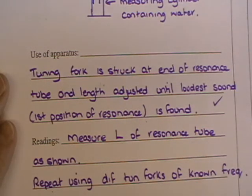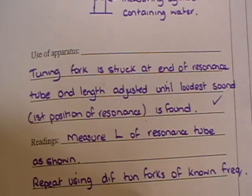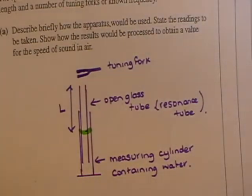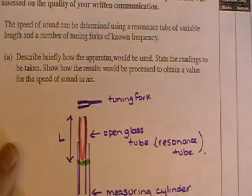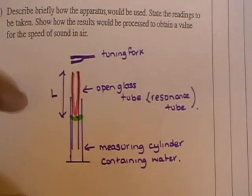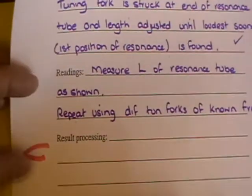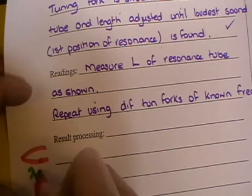Now, repeat using different tuning forks of known frequency. How are you going to use this? So I'm just going to draw in here, and hopefully you'll see this, the first position of resonance. And the first position of resonance, the shape of the standing wave which is produced is like this. And I've just drawn it in there in red, or pink actually. So hopefully you can see that. And you should be able to see, if I draw it at the side here, that length is equivalent to one quarter of a wavelength.